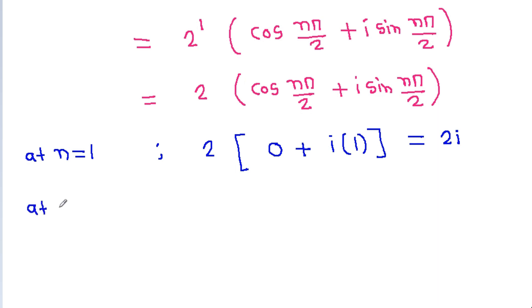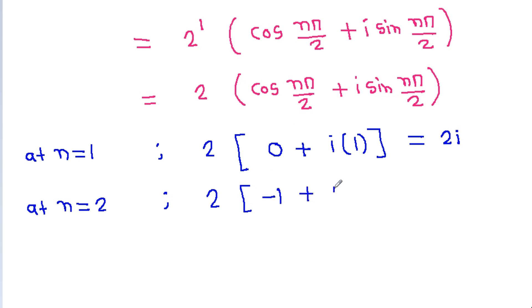At n equal to 2, it will be 2 times [cos(π) plus iota times sin(π)]. Since cos(π) is minus 1 and sin(π) is 0, that gives minus 2.